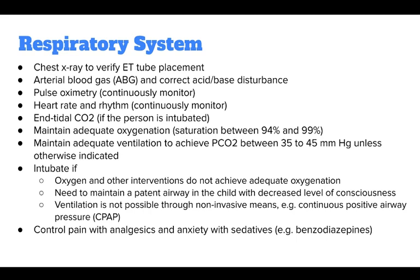For the respiratory system, you need to obtain a chest x-ray to verify ET tube placement, get an arterial blood gas, or ABG, and correct acid-base disturbances. Monitor pulse oximetry continuously, heart rate and rhythm continuously, and end-tidal CO2 if the patient is intubated. Maintain adequate oxygenation with a saturation between 94 and 99%, and maintain adequate ventilation to achieve a PCO2 between 35 to 45 mmHg unless otherwise indicated. Intubate if oxygen and other interventions do not achieve adequate oxygenation.